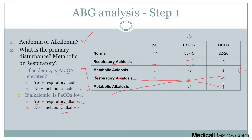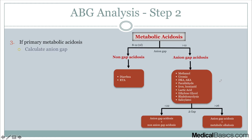Once we know it's a respiratory acidosis, we're good right there. But if it's a metabolic acidosis, it gets a little more tricky. When dealing with a primary metabolic acidosis, we have to think about it in a couple of different ways. The first thing is going to be the anion gap.